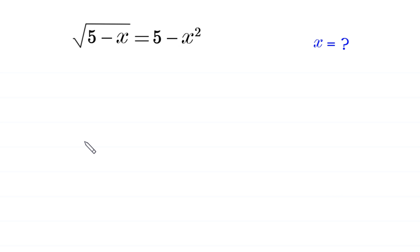Hello everyone, you are welcome to how to solve this very nice radical equation. Square root of 5 minus x is equal to 5 minus x squared. We need to find all possible values of x.